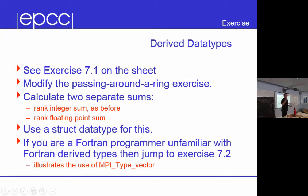Exercise 7 is not to pass an integer around a ring, but to pass a compound structure which comprises an integer value and a double position value.